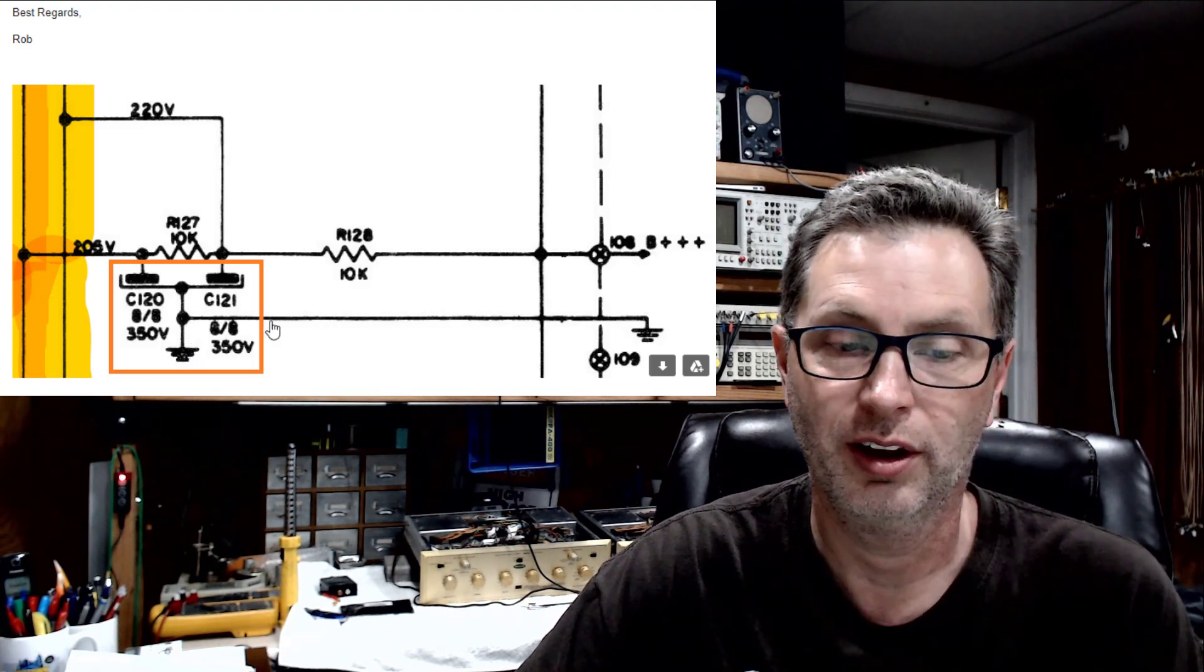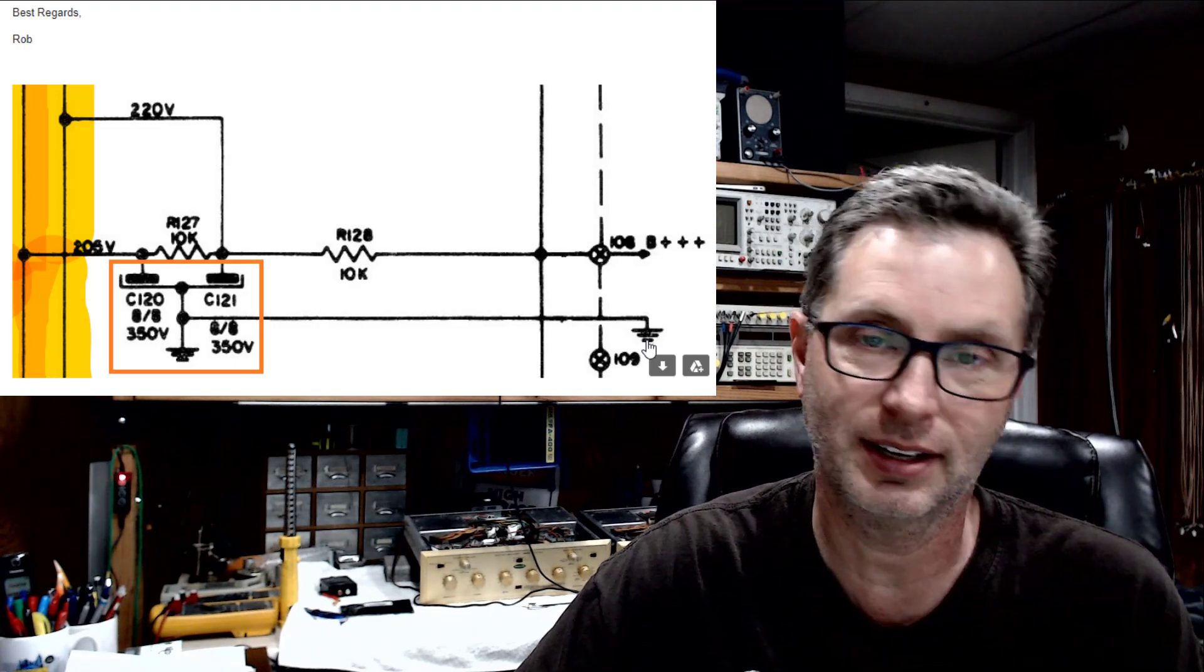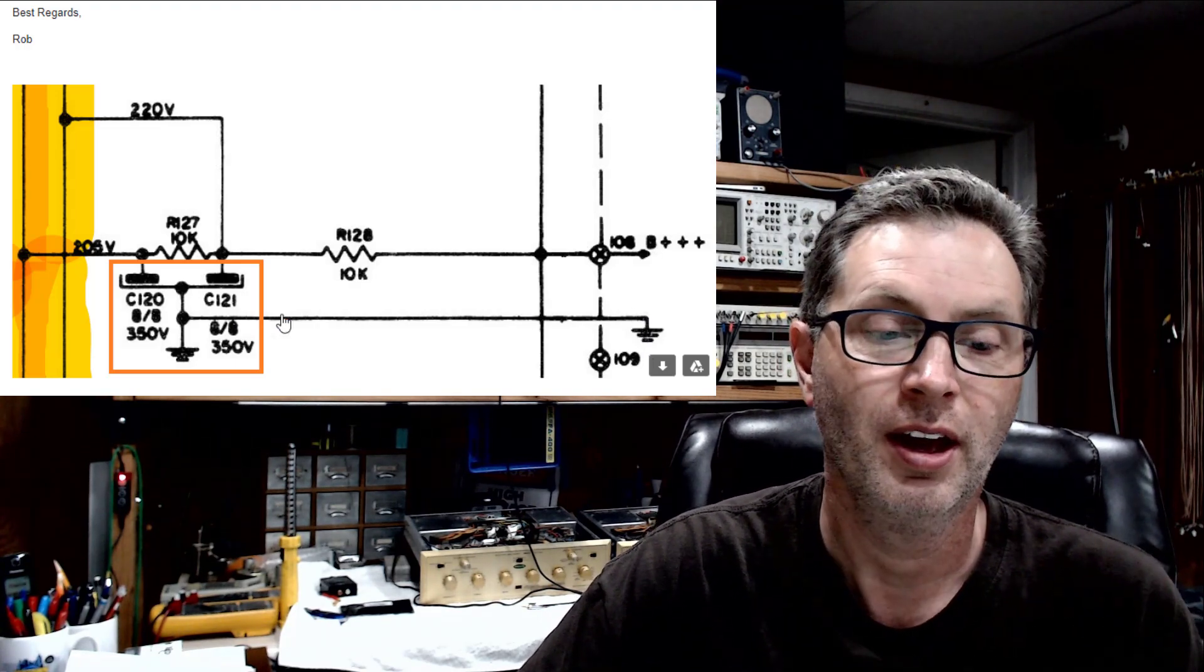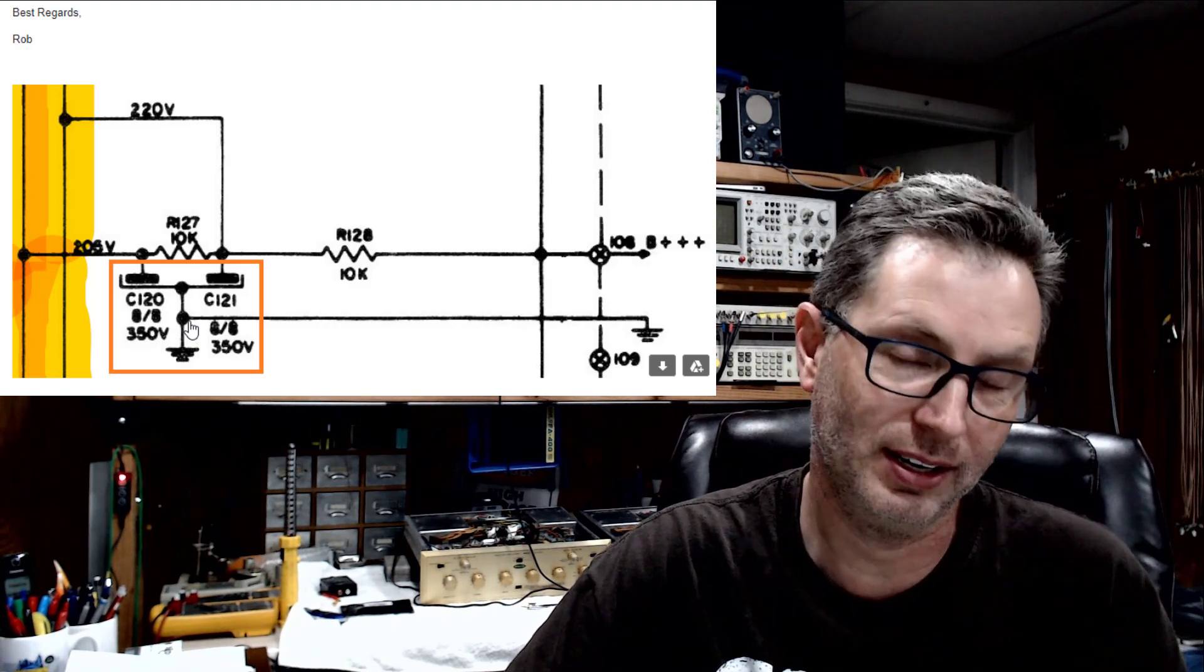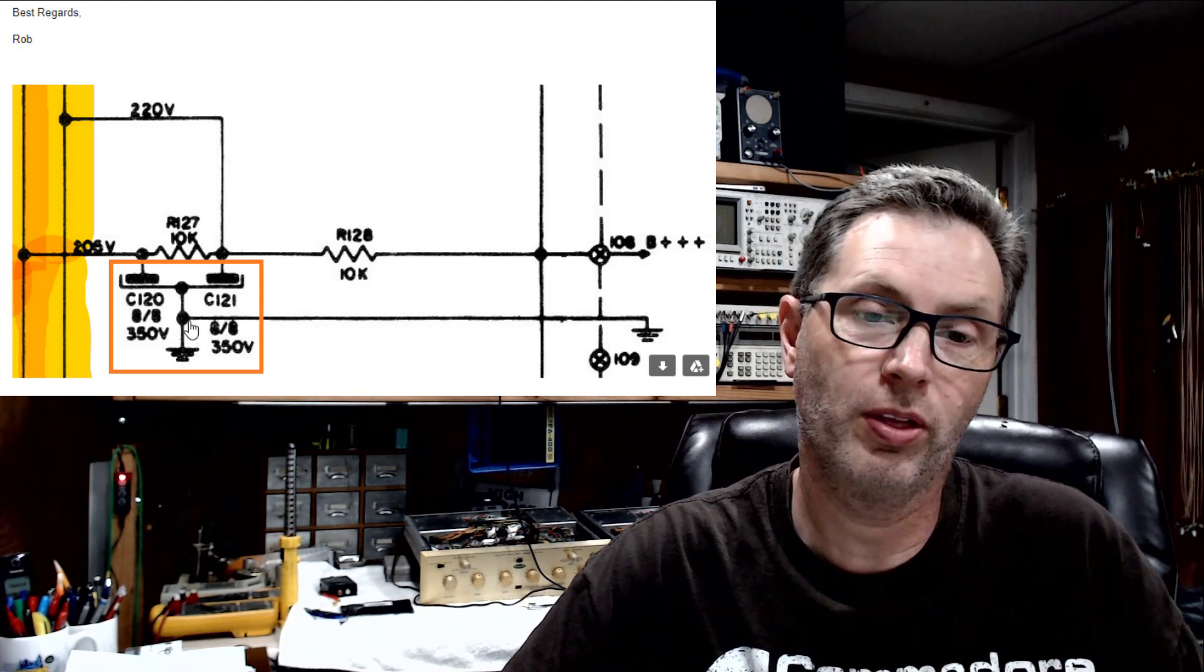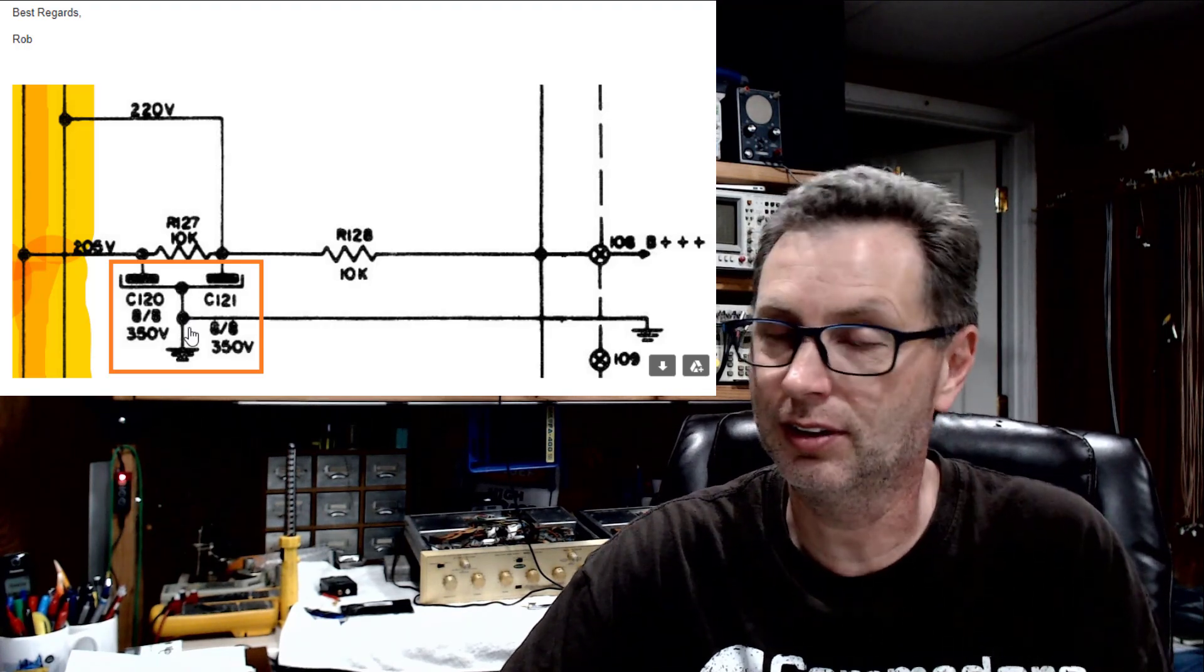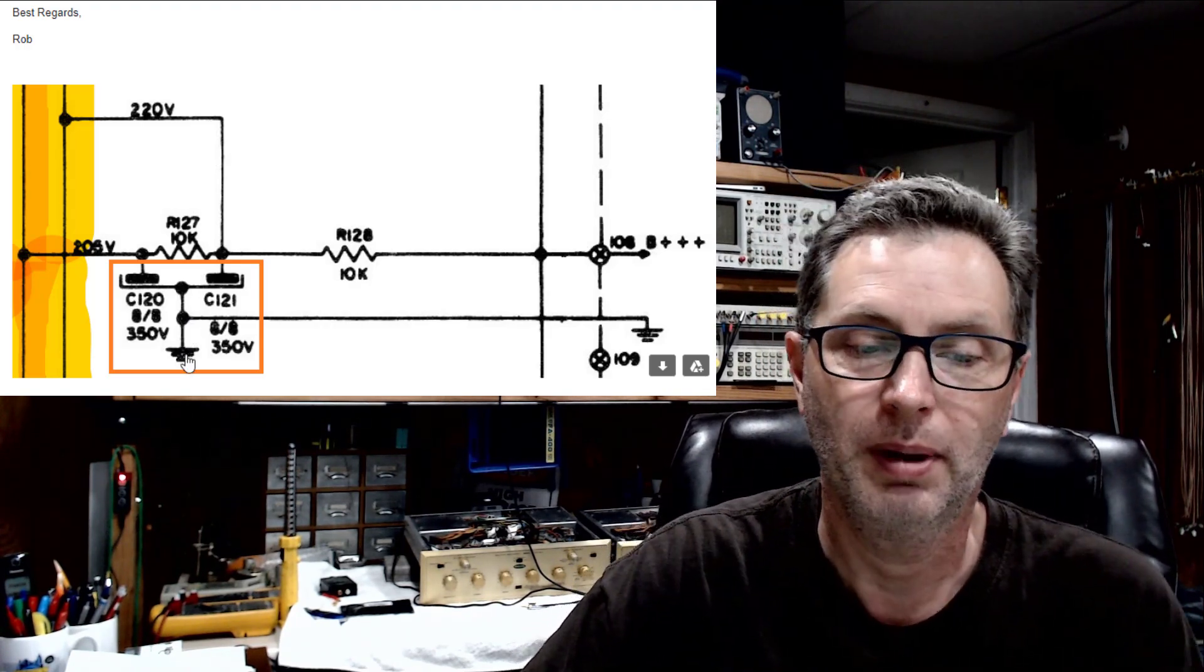You're going to take this can and tie it together and tie it off to ground. It's not always the case. Sometimes the can can be positive and not tied to ground. Sometimes it can be the negative for the power supply but not tied to the chassis of the amplifier.